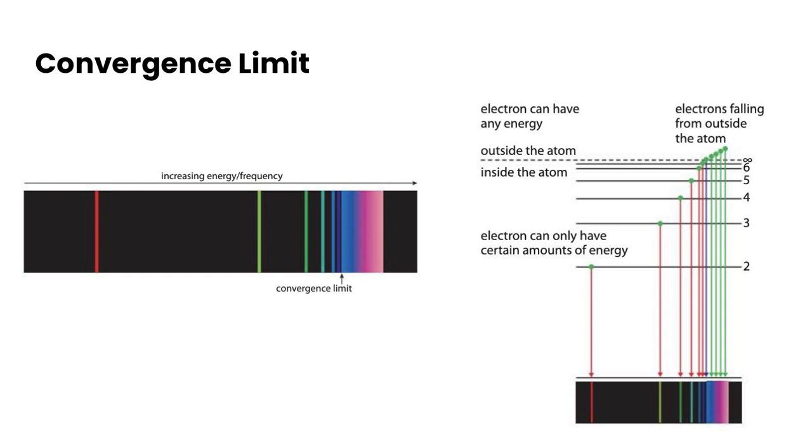One other point we need to talk about quickly here, and we will revisit later, is something called the convergence limit. If you notice this visual here, you'll notice that the difference between n equals one to n equals two is quite big. Then from two to three it gets smaller, three to four gets even smaller, four to five even smaller, and it gets smaller and smaller as you get further from the nucleus. What happens with these transitions and line spectra is that as you get further from the nucleus, the lines get closer and closer together because there's very little difference at this point.